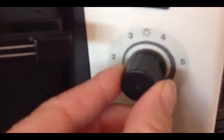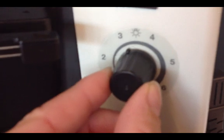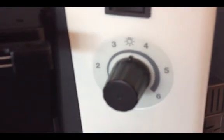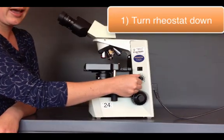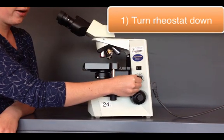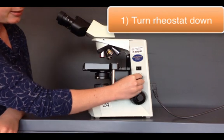If the rheostat is turned all the way up and then you turn on the microscope, it could burn out the bulb. So the first thing you do is make sure the rheostat is turned all the way down to the lowest setting. In this case, 1.